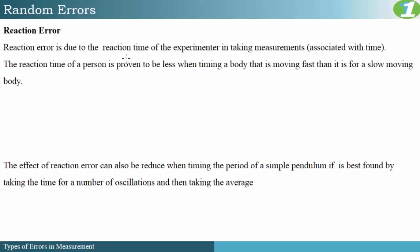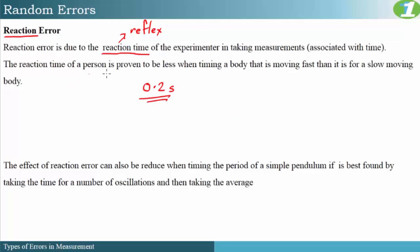Reaction error is due to the reaction time of the experimenter in taking measurements associated with time. Usually when you are doing experiments that involve timing, that is where reaction error takes its effect. The reaction time may vary from person to person depending on your reflex, since reaction time is dependent on a person's individual reflex action. The usual reaction time for the average person is 0.2 seconds. It is also proven that reaction time is less when you are timing a body that is moving faster than when timing a slow-moving body.